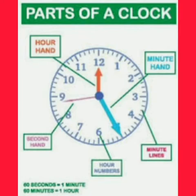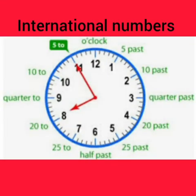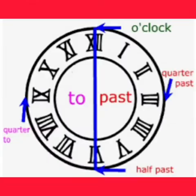Let's learn about the parts of a clock. A clock has a short hand, which is also known as an hour hand. A long hand, which is known as a minute hand. A second hand. The numbers are known as hour numbers, and the lines between the numbers are known as minute lines. The clock also has a face on which the numbers are placed. The numbers can be international numbers or Roman numbers.